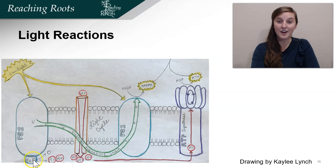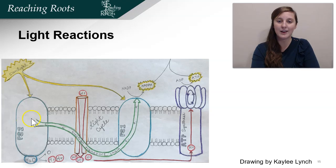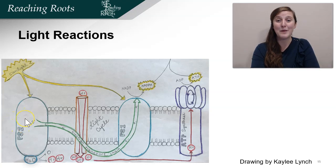Next, water — which plants uptake through their roots — is split into electrons, hydrogen, and oxygen: the oxygen that we breathe. The electrons that come off the water are used to replace the excited electrons that left photosystem 2, and that replacement is important so that photosystem 2 remains stable.